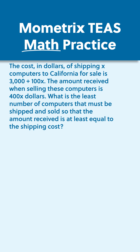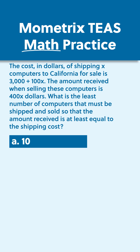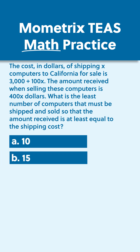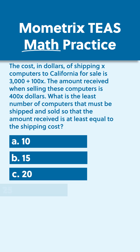What is the least number of computers that must be shipped and sold so that the amount received is at least equal to the shipping cost? A: 10, B: 15, C: 20, or D: 25?